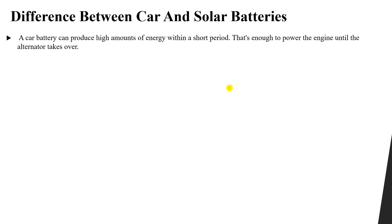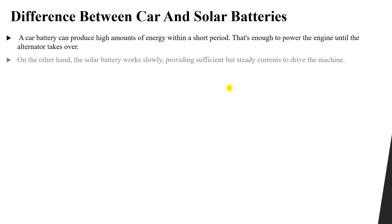Car batteries are not suitable for long duration use. However, solar batteries work slowly — they provide sufficient but steady current to drive electrical equipment. Solar batteries provide a steady amount of power for a longer period, whereas car batteries provide a very large amount of energy in a short period of time.